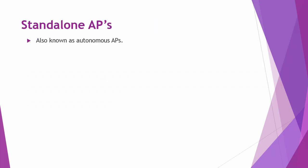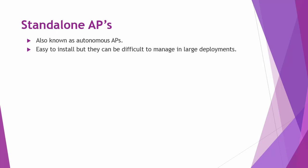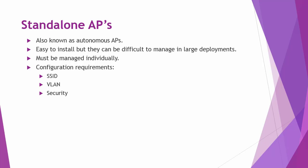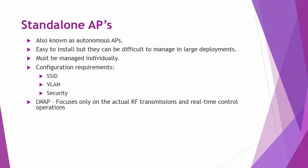Standalone access points, also known as autonomous access points, are easy to install but difficult to manage in large deployments, as they must be managed individually with parameters like SSID, VLAN, and security features configured manually on each device. The Cisco Unified Wireless Network introduced the concept of lightweight access points and wireless LAN controllers — LWAPs and WLCs — which divide responsibilities and functionalities that an autonomous AP would normally perform on its own. This technology adds scalability by separating the wireless LAN data plane from the control plane into a split MAC design.